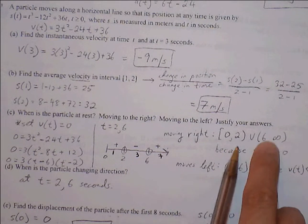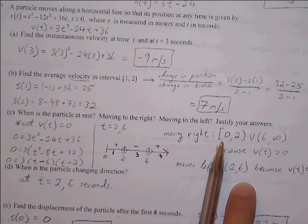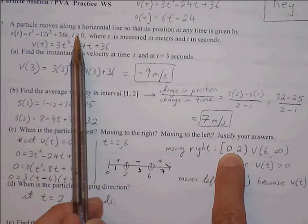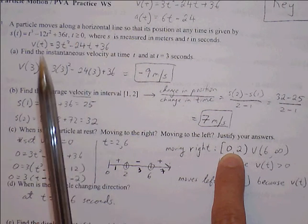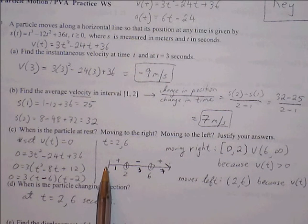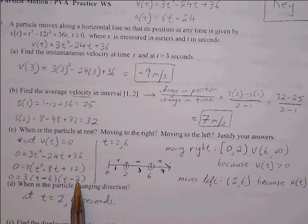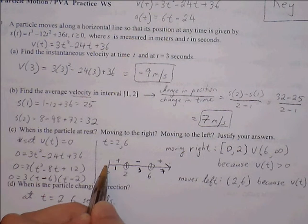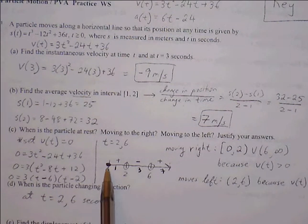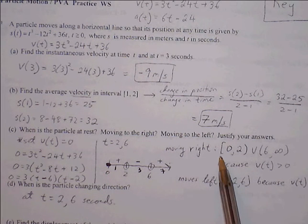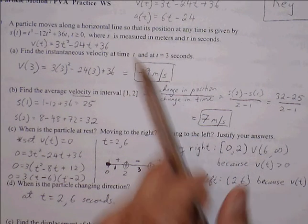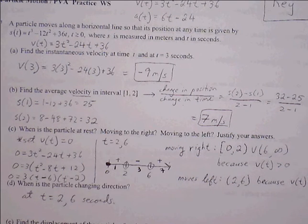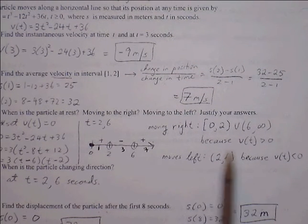Why do we put a bracket around 0? The condition says t is greater than or equal to 0, so 0 is part of our domain. If we plug 0 into the velocity function — 0 minus 6 times 0 minus 2 — that's negative times negative, which is positive. So at t=0 the particle is moving to the right. We include a bracket because at that moment the particle is moving and 0 is part of our domain.